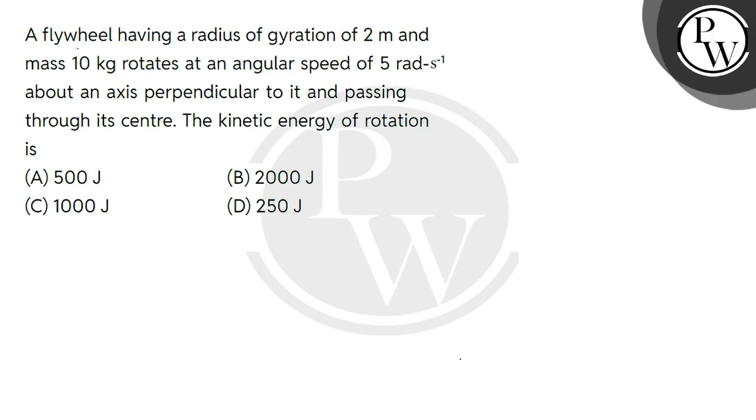Hello, let's read the question. A flywheel having a radius of gyration of 2 meters and mass 10 kg rotates at an angular speed of 5 radians per second about an axis perpendicular to it and passing through its center.